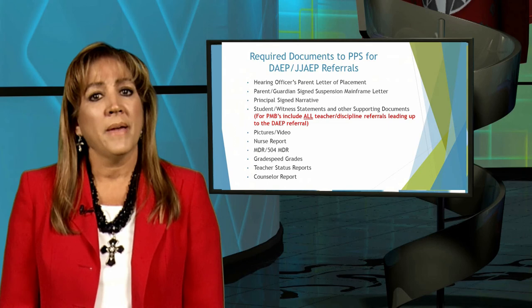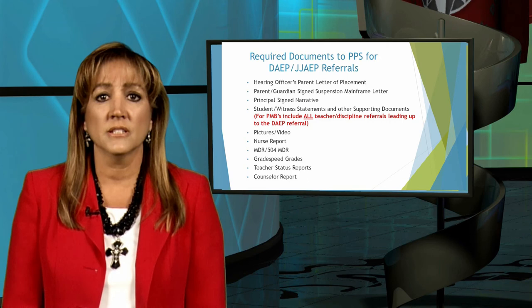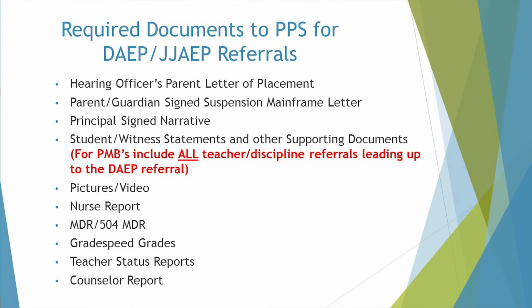A copy of both of these documents should be placed in the student's discipline file for state auditing purposes. During the past state validation audits, PPS has found that the campuses with 100% documentation bind the following documents and place them in the student's discipline folder when referred to PPS for a DAP placement: the hearing officer's parent letter of placement, the parent/guardian signed suspension mainframe letter, the principal signed narrative, the student and witness statements, and other supporting documents — pictures/video, nurse report, MDR or 504 MDR, Gradespeed grades, teacher status reports, and counselor report.